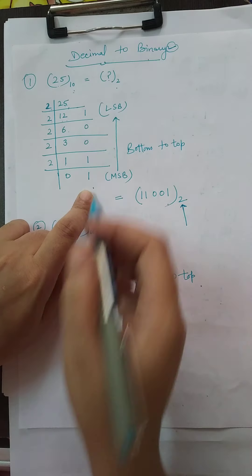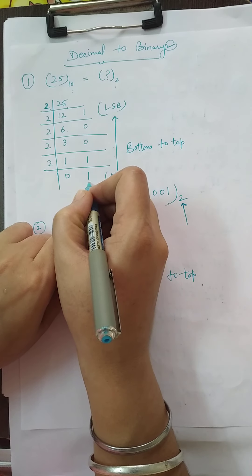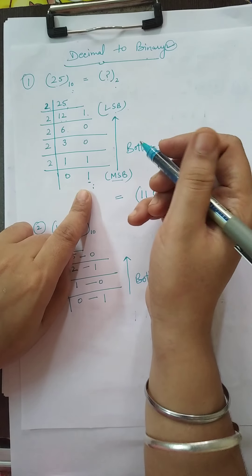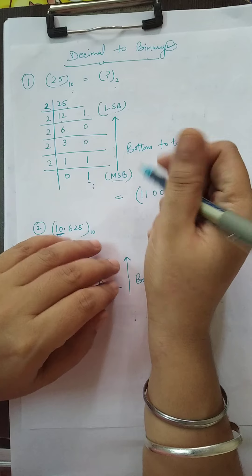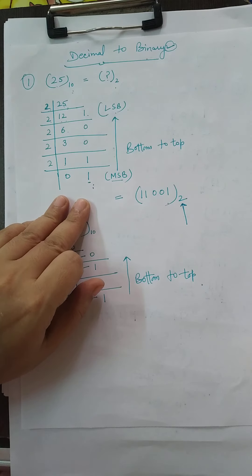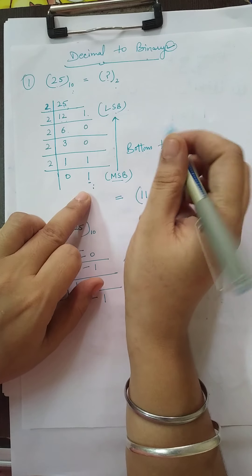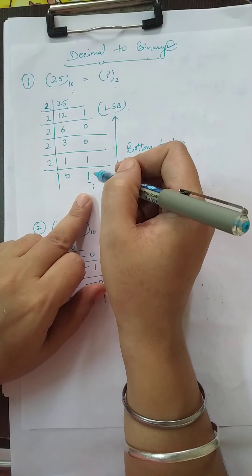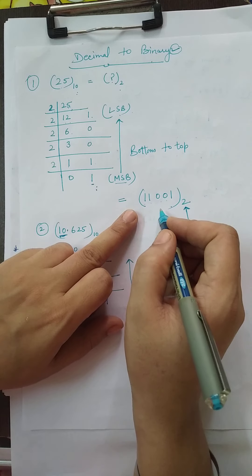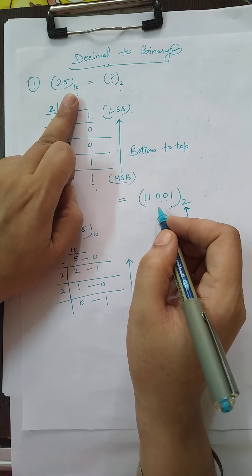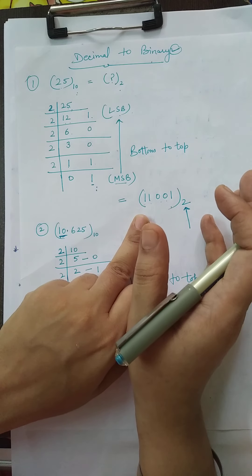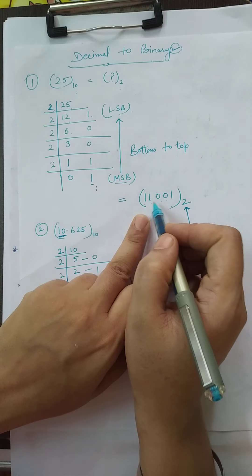So this is the most significant bit. The last bit is known as the most significant bit and the first bit is known as the least significant bit. While reading this binary number, read the number from bottom to top: 11001. So write here 11001. This is the answer of decimal number 25, which in the binary number system is 11001.